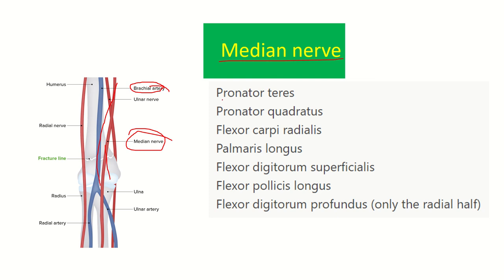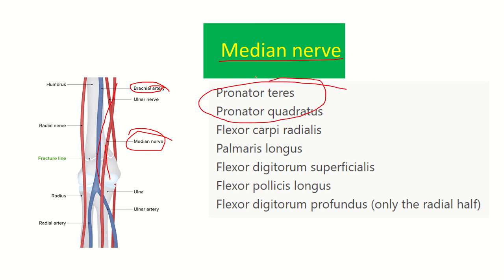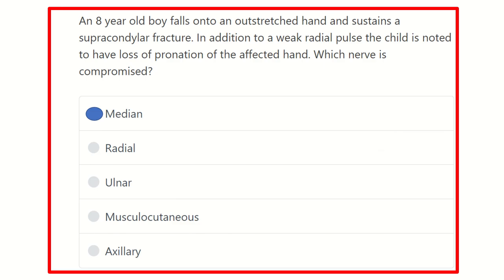The median nerve supplies the following muscles: pronator teres, pronator quadratus, flexor carpi radialis, palmaris longus, flexor digitorum superficialis, flexor pollicis longus, and flexor digitorum profundus — only the radial half. Most importantly, it supplies pronator teres and pronator quadratus, so the median nerve is responsible for pronation of the forearm.